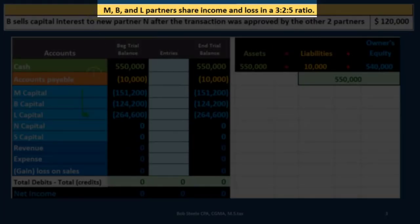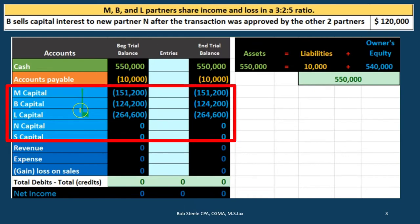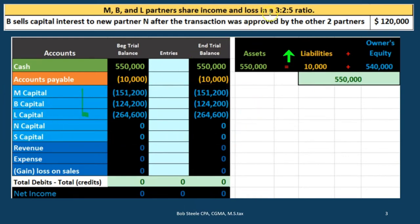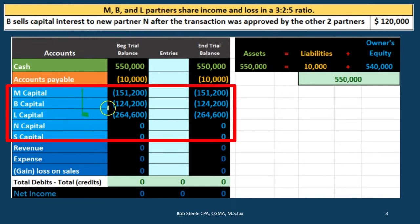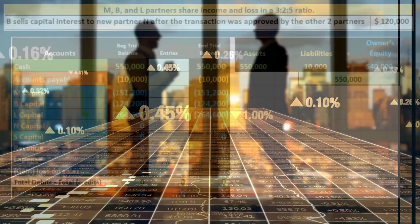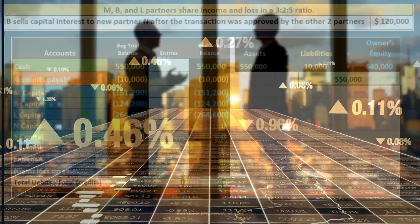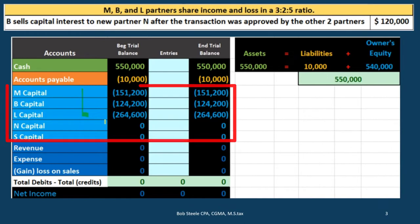We have three partners — M, B, and L — and these capital accounts share profit and loss at a 3:2:5 ratio. B will be selling their capital account interest to N. After the transaction was approved by the other two partners, the sale will be for cash of $120,000.